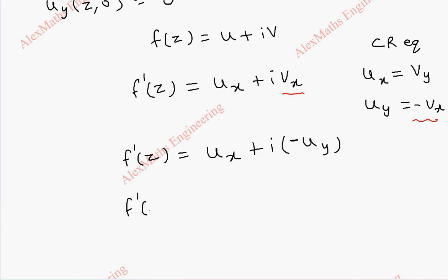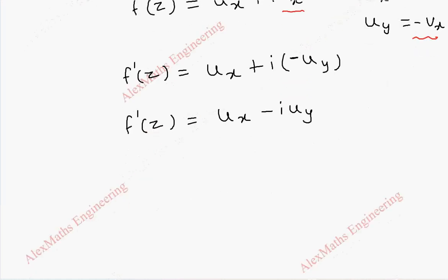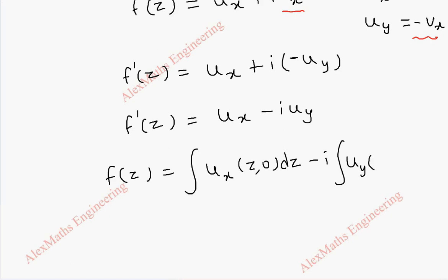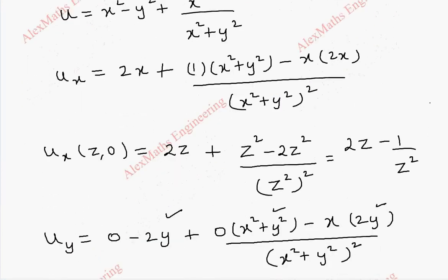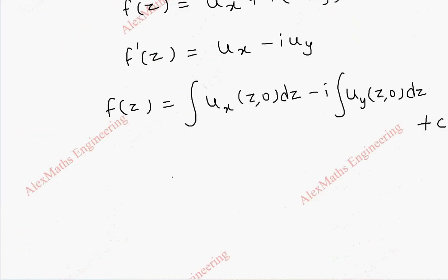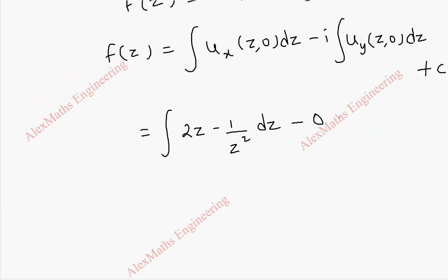So f'(z) = ux - i·uy. Using the Milne-Thompson method, f(z) becomes the integral of ux(z, 0) dz minus i times the integral of uy(z, 0) dz, plus c. Now ux becomes 2z - 1/z², so the first term is the integral of (2z - 1/z²) dz, and since uy is 0, the second part is completely 0. We have plus c.